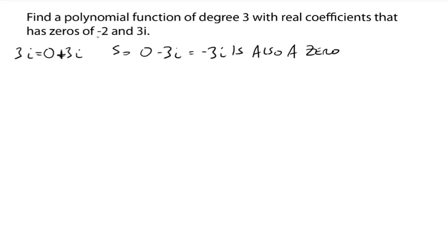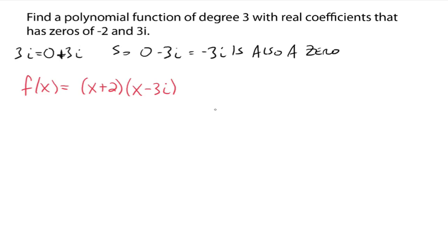So we have three zeros: negative 2, 3i, and negative 3i. If negative 2 is a zero, then x minus negative 2, which is x plus 2, is a factor. If 3i is a zero, then x minus 3i is a factor — that goes back to the factor theorem and the remainder theorem. And if negative 3i is a zero, then x minus negative 3i, which is x plus 3i, is a factor. So we have three zeros and three factors.